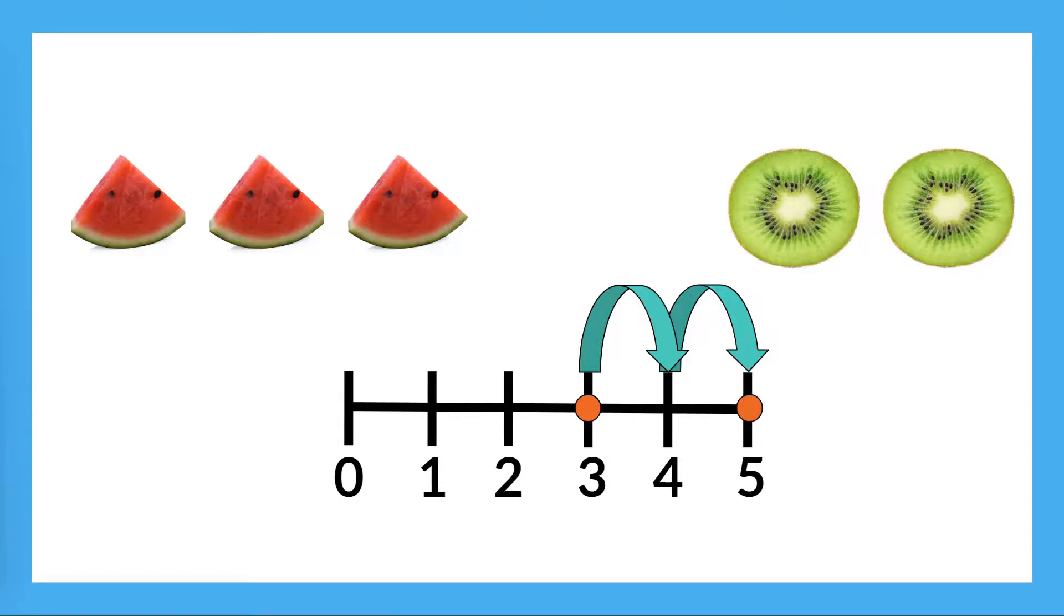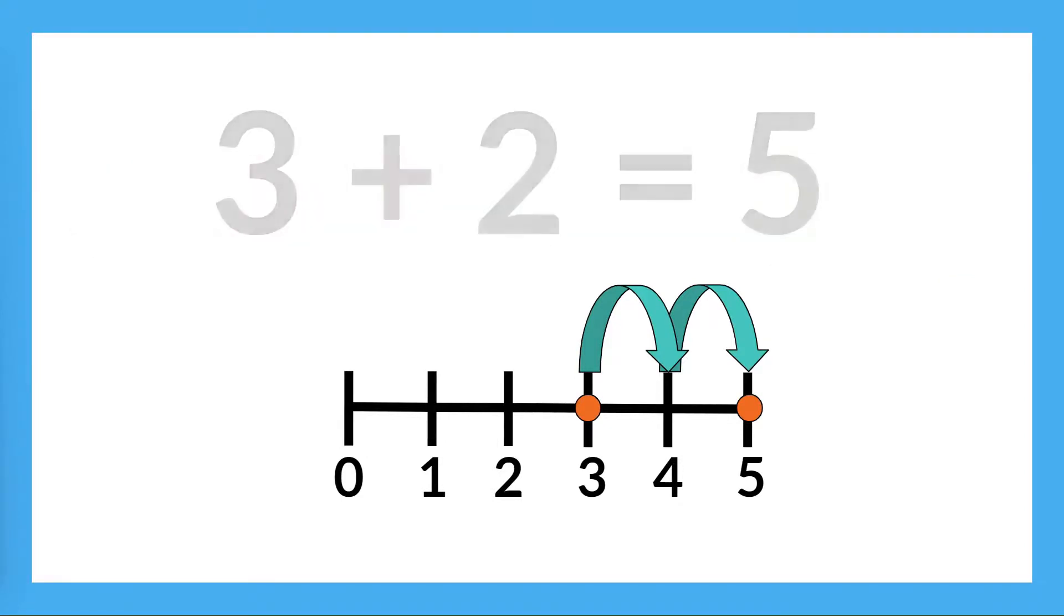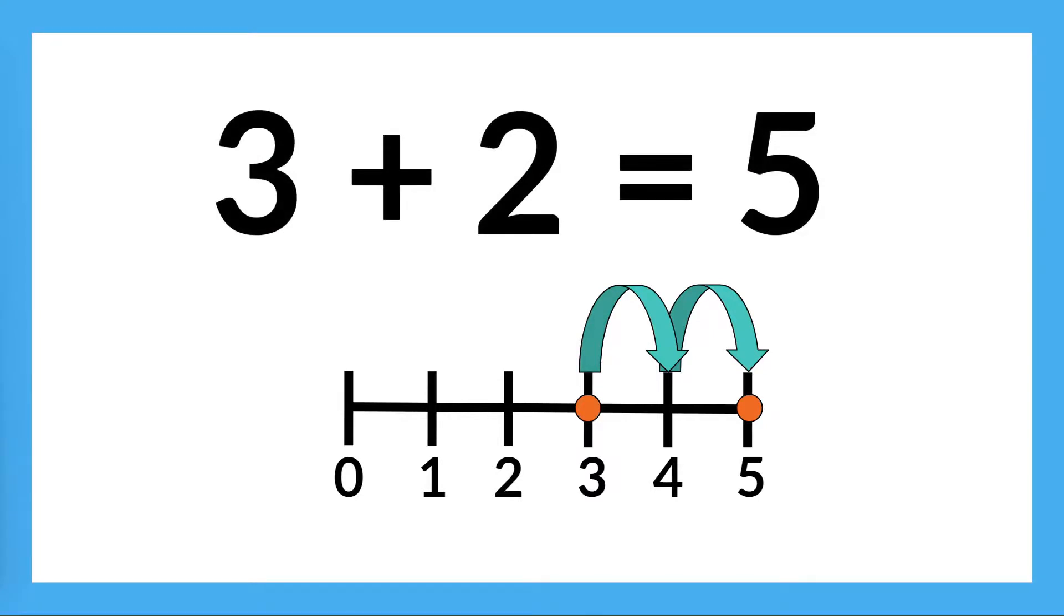Is that the same answer we found when we solved this problem by counting up? Yes, it is. There are lots of different strategies you can use to solve math problems. Now we know that three watermelon slices plus two kiwi slices equals five slices of fruit in all. Nice thinking.